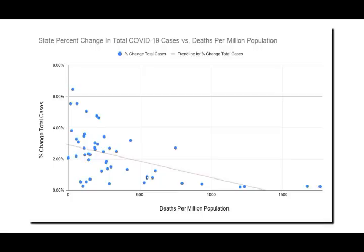In this next graph, I plotted deaths per million population along the x-axis and percent change in total cases along the y-axis. This graph shows very clearly that states with higher deaths per million are seeing much smaller increases in total cases, which would imply they are close to herd immunity. From this graph, it appears that herd immunity occurs somewhere around 500 deaths per million, meaning the virus generally kills about 0.05% of the population — put another way, the virus does not appear to kill 99.95% of people.